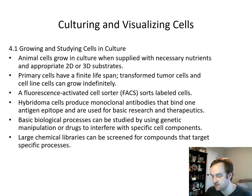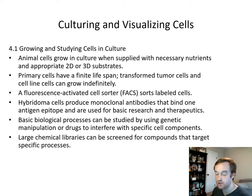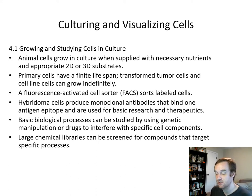So what's the why and the how of culturing and visualizing cells? Animal cells grow in culture when you supply them with the nutrients they would normally get from blood or growing within an organism. You also have to supply them with an appropriate 2D or 3D substrate for them to grow upon. Primary cells have a finite lifespan, but transformed tumor cells, as well as cell lines like stem cells, can grow indefinitely.